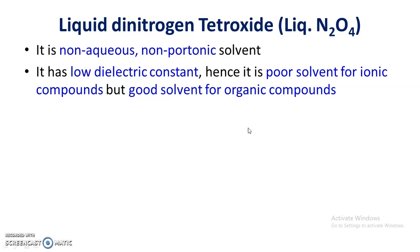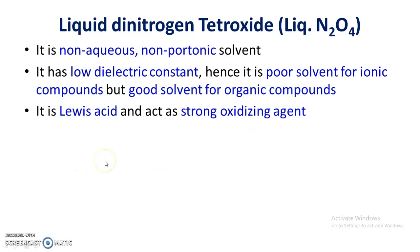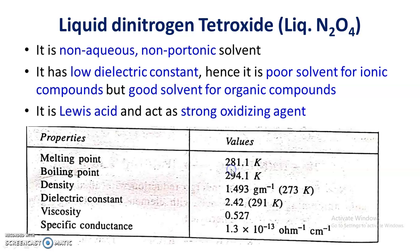Most organic compounds including alkenes, halo compounds, nitro compounds, and carboxylic acids are freely soluble in liquid dinitrogen tetroxide. It is a Lewis acid and it acts as an oxidizing agent.